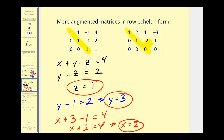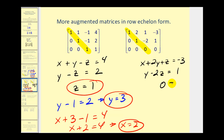Looking at the second augmented matrix in row echelon form: the first row gives x plus 2y plus z equals negative 3, and the second row gives y minus 2z equals 1. Notice the last row translates to 0 equals 0, which is always true. This is how an infinite number of solutions appears in augmented matrix form. If that statement were false — for example, 0 equals some non-zero number — there would be no solution.